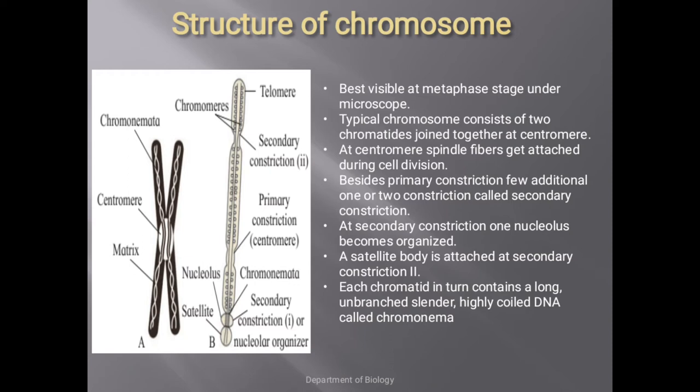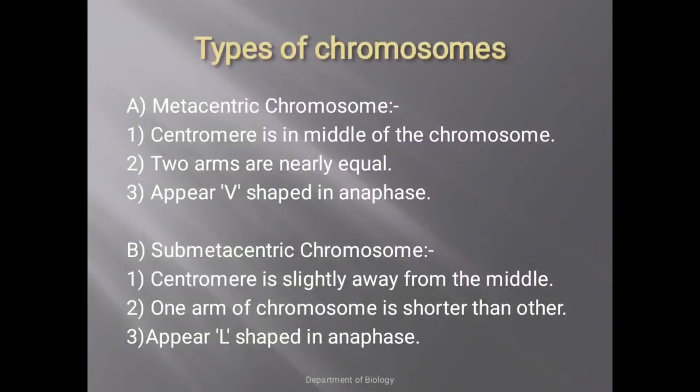You can see the chromomere inside the diagram. That is all about the structure. Now, depending upon the presence or location of the centromere, chromosomes are further divided into four types: metacentric, submetacentric, acrocentric, and telocentric. In metacentric chromosomes, the centromere is almost present in the middle, so the arms are nearly equal, and the chromosome appears V-shaped in anaphase.